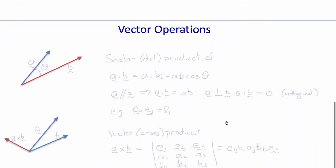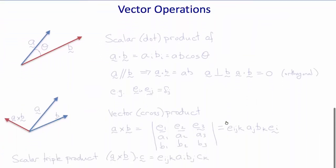Now you're familiar with operations on vectors such as the scalar or dot product of two vectors a and b. For example, if a and b are here separated by an angle theta, then the dot product, or scalar product of a and b is a dot b, which equals ai bi and is equal to the magnitude of a times the magnitude of b times the cosine of the angle between them.